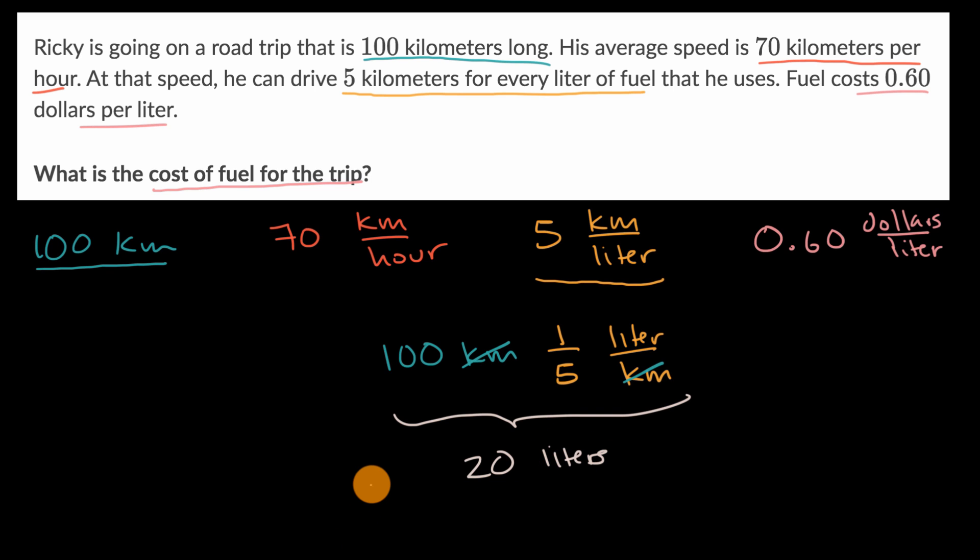And then if we were to multiply that times the cost of fuel per liter, well, then we know how much the cost of our trip is. So let's do that. Let's multiply this times 0.60 dollars per liter.